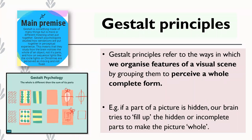The first type of visual perception principle is gestalt principles. Gestalt principles are basically the ways in which we organize a visual scene by grouping items together to perceive a whole, complete form.